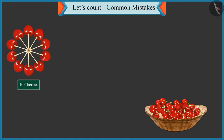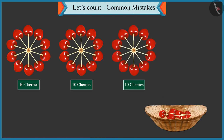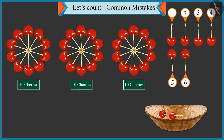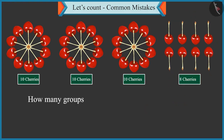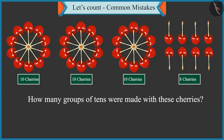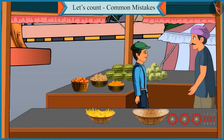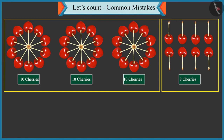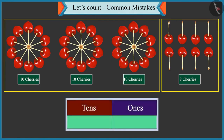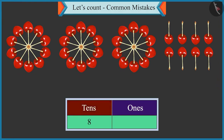One, two, three, four, five, six, seven, eight, nine and ten — first group of ten. Second group of ten. Third group of ten. Now let's count the remaining cherries: one, two, three, four, five, six, seven and eight. How many groups of tens were made? There are three groups of ten cherries. Now tell me, how will you write three groups of tens and eight single cherries in the form of tens and ones?